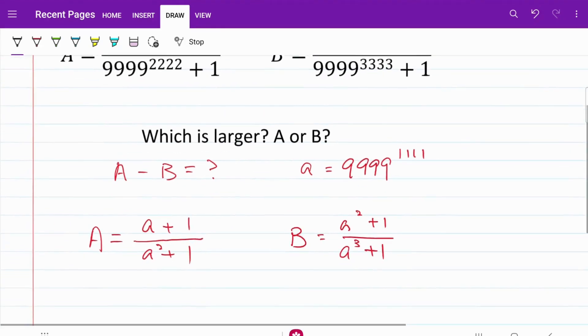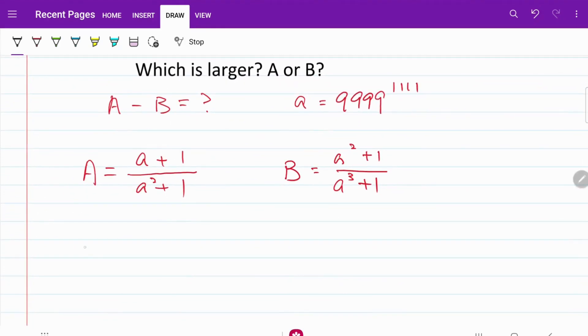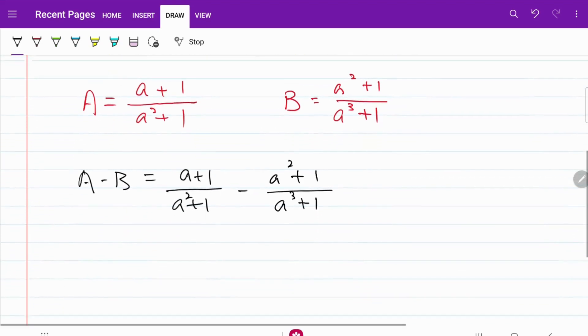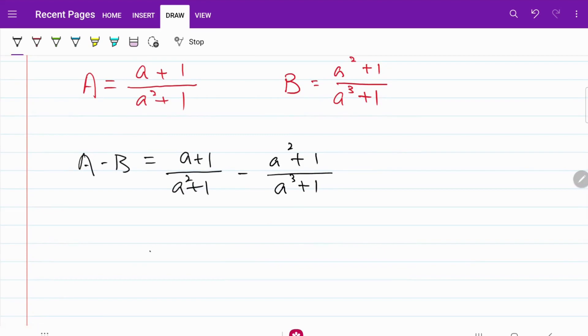So this is what A minus B will look like. A minus B is equal to a plus 1 over a squared plus 1 minus a squared plus 1 over a cubed plus 1. Let's go ahead and work out the simple subtraction.